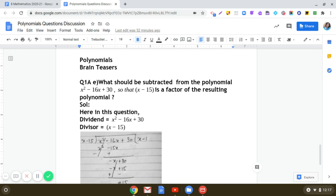Dear students, let us discuss another question from the brain teasers. What should be subtracted from the polynomial x² - 16x + 30 so that x - 15 is a factor of the resulting polynomial?